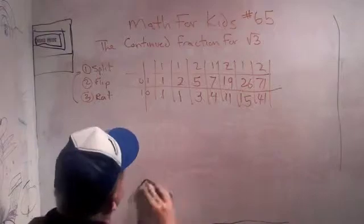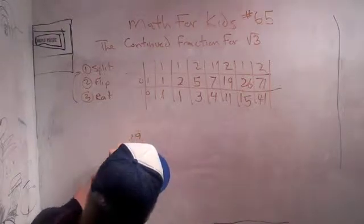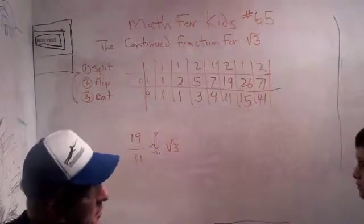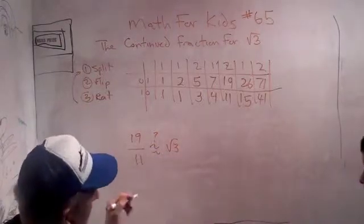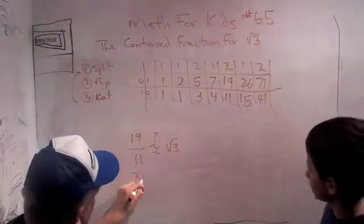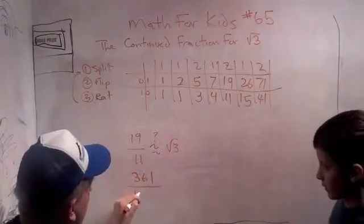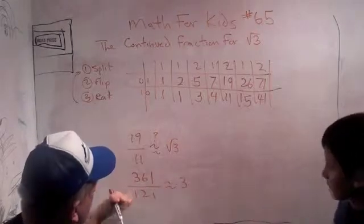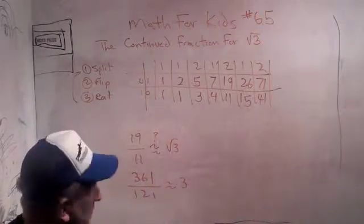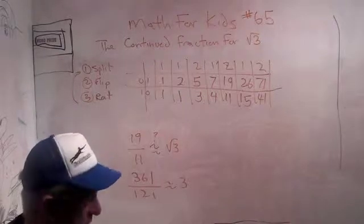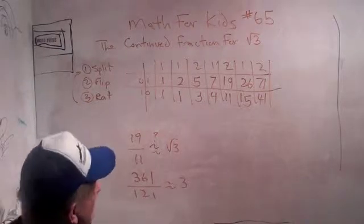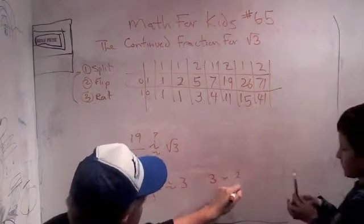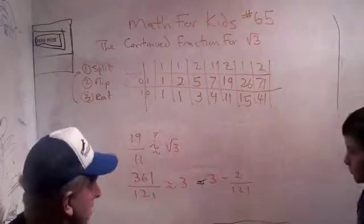Let's do 19 elevenths. 19 squared is 361, and 11 squared is 121. What's 121 times 3? It's 363. So 361 over 121 equals 3 minus 2 over 121. That's a pretty good approximation.